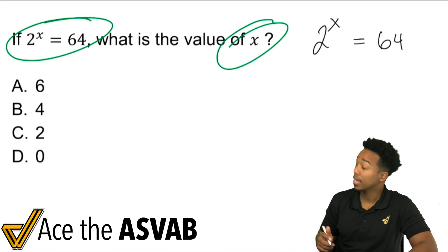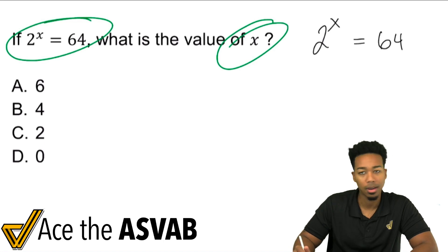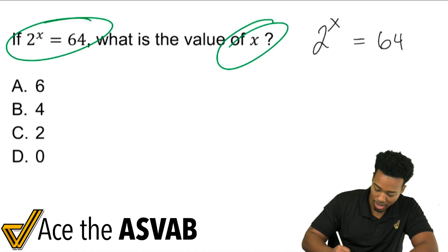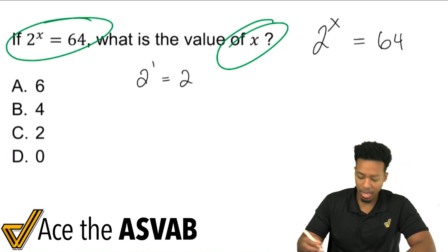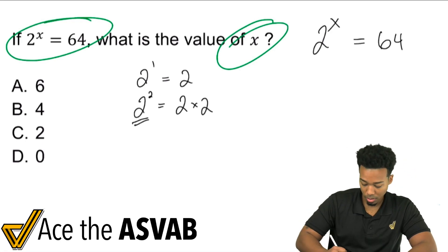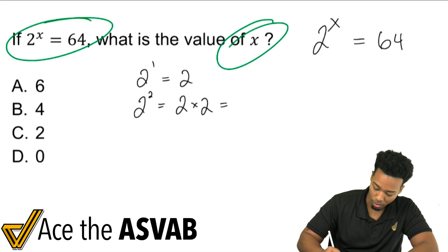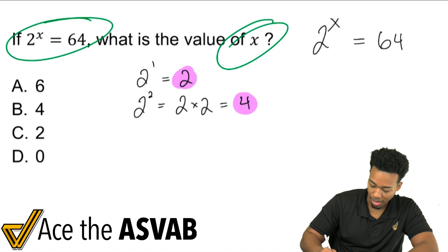So here we go. We have 2 to the power of x equals 64. So we know that exponents mean you're going to multiply that number by itself however many times. So if we had 2 to the power of 1, well, that would just be a single 2. If we had 2 to the power of 2, that would be 2 times 2, because 2 multiplied by itself twice right there. And then that would be 4.